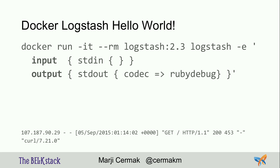I want to quickly show you how to run Hello World Logstash with a one-line command. I'm running a Logstash 2.3 image — I'm specifying 2.3 because version 5 is coming soon and I want to lock the version. I'm configuring it to run the Logstash program within the container, with standard input as the input plugin and standard output with the Rubydebug codec as the output plugin.